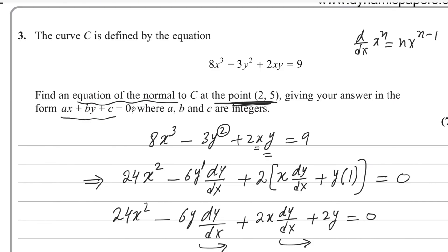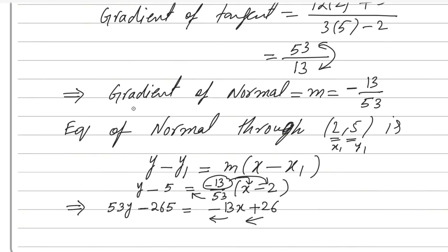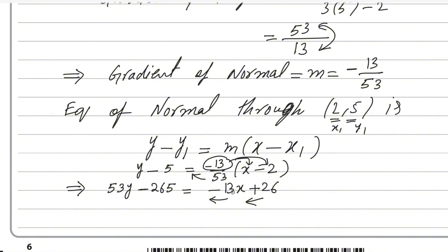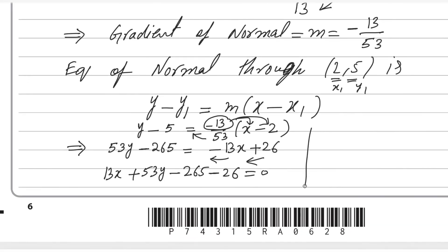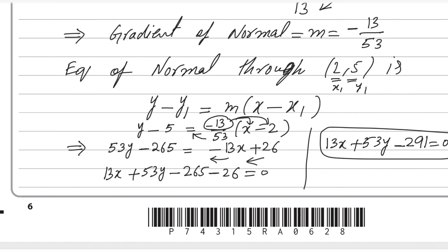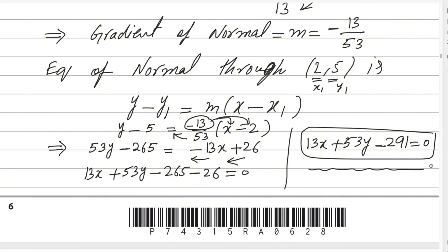Simplifying, we get 13x + 53y - 291 = 0. This is the required equation of the normal line. Question number 3 is done. If you have any questions or doubts about this question, please write in the comment box. Thank you.